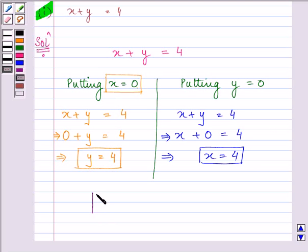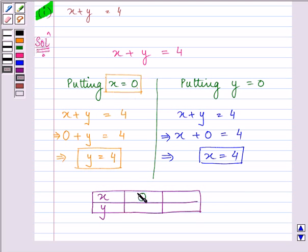Let's make a table. When we substituted the value of x as 0, we obtain the value of y as 4 and when we substituted the value of y as 0, we obtain the value of x as 4.